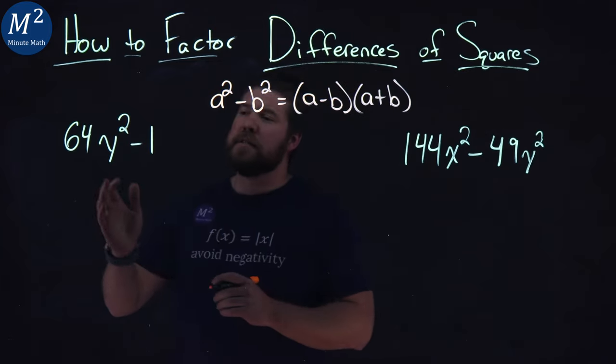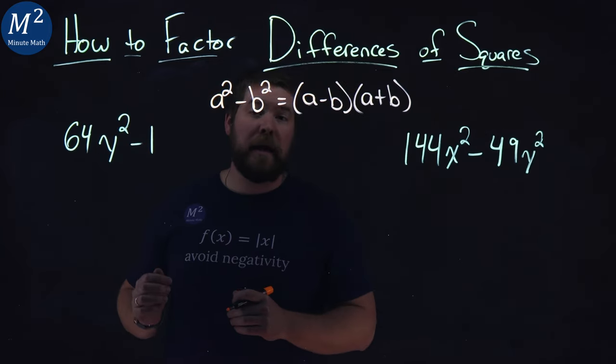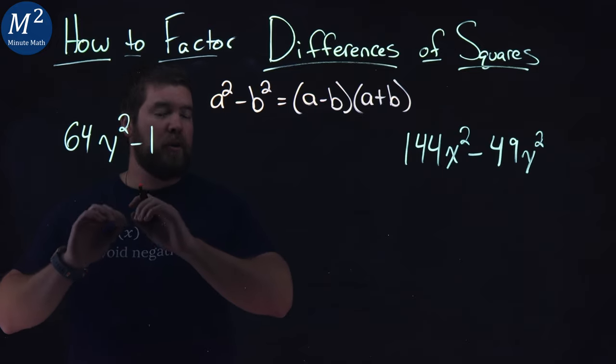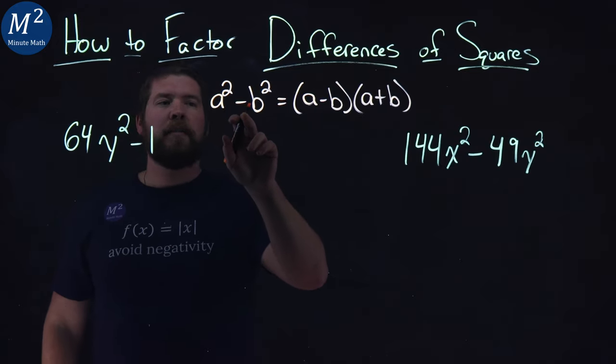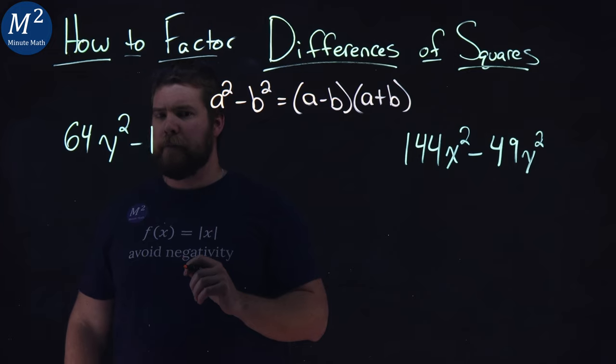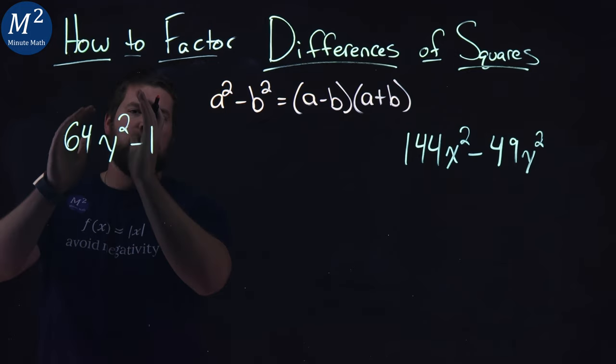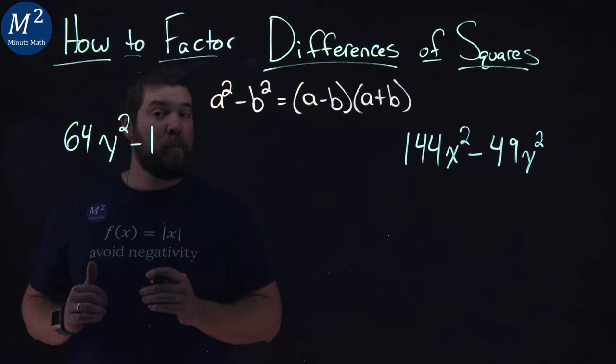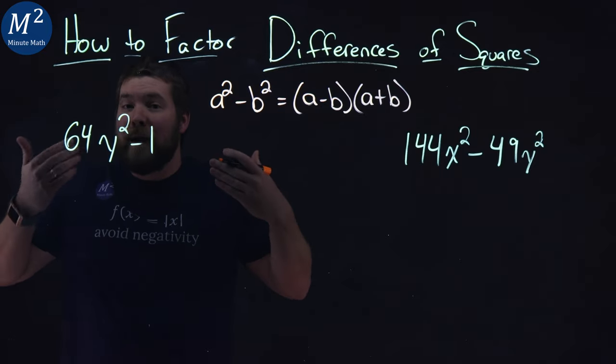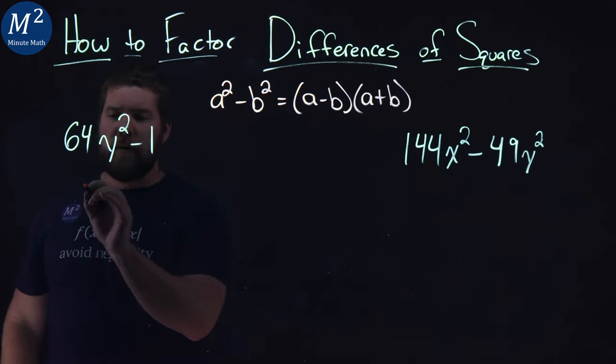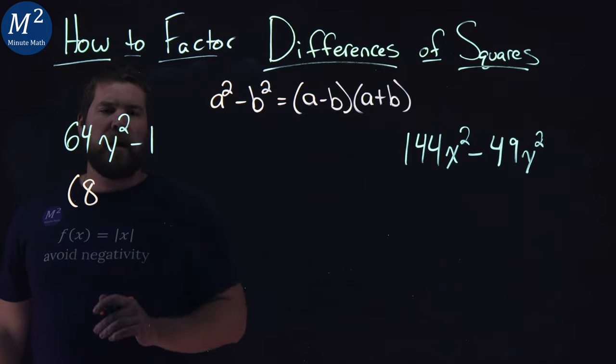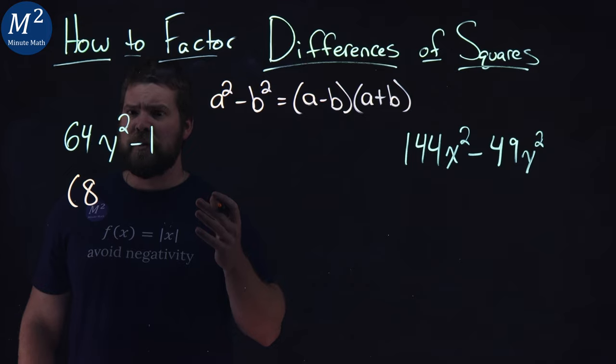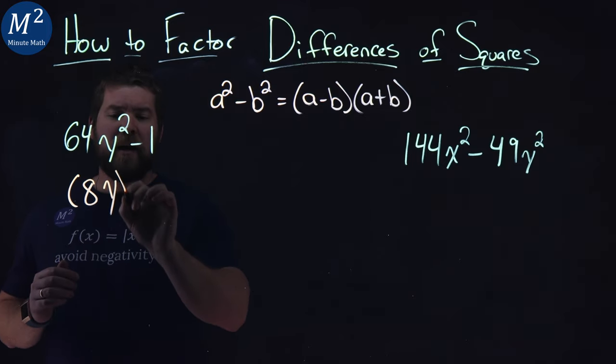Our first one here is 64y squared minus 1. I want to see if I can rewrite this polynomial in terms of an a squared minus a b squared. 64y squared, we'll see that first. Well, luckily, 64 is a perfect square. 8 squared equals 64. So I'm going to start with an 8 here. y squared is equal to y squared, actually. So the value y here I can put down,